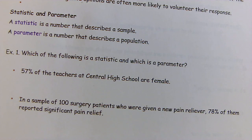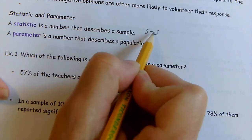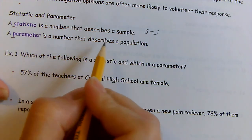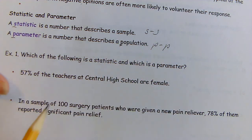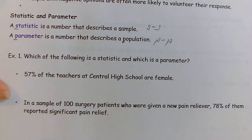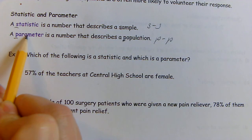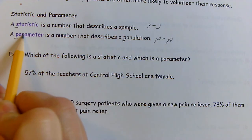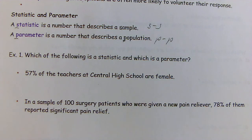The difference between a statistic and a parameter: a statistic is a number that describes a sample, while a parameter is a number that describes a population. Both are numerical values — it just depends on whether it's describing a sample or a population. You can remember: S as in statistic goes with S as in sample; P as in parameter goes with P as in population.